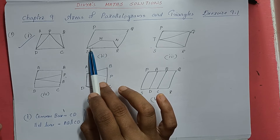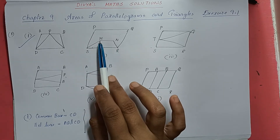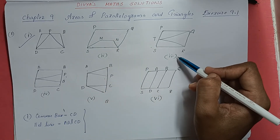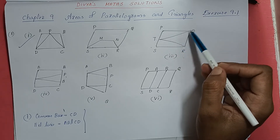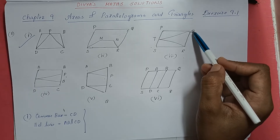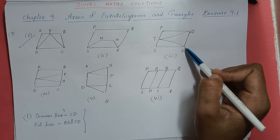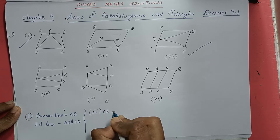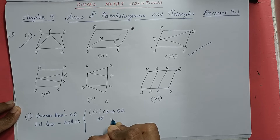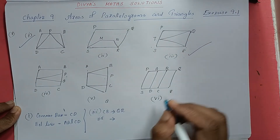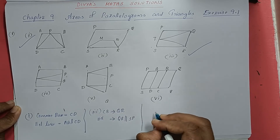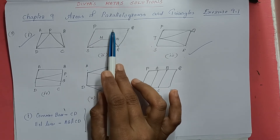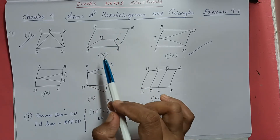Second figure: both shapes come from the same base MN, but we can see that the vertex is not reaching the same parallel line. So this figure does not come under this category. The base is there, but the parallel lines are not consistent — SR is parallel to PQ only, so the two figures are not between the same parallel lines. That is why we are not selecting the second figure.